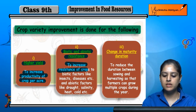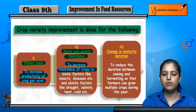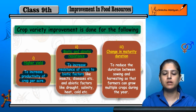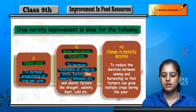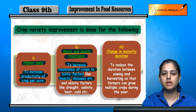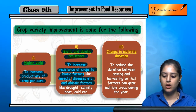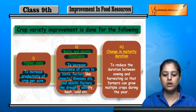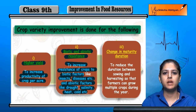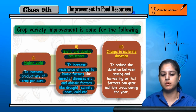The second reason is biotic and abiotic resistance. We increase the resistance of crops to biotic factors — living factors like insects and diseases — and abiotic factors, which are non-living factors like drought, salinity, heat, cold, temperature, and climate.